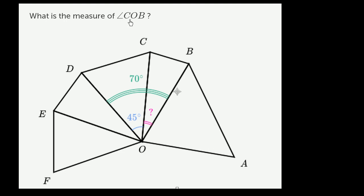What is the measure of angle COB? So this is C, this is O, and this is B.